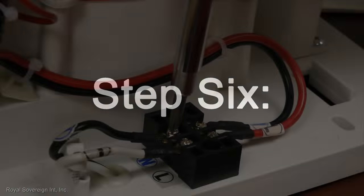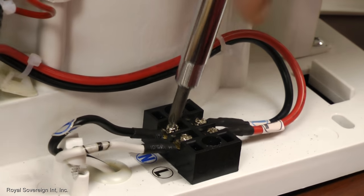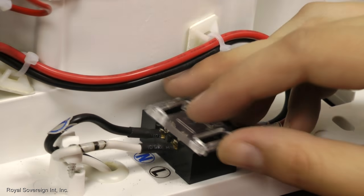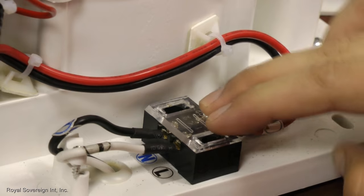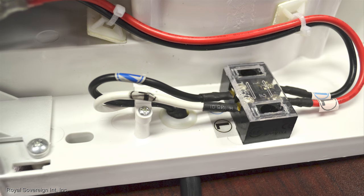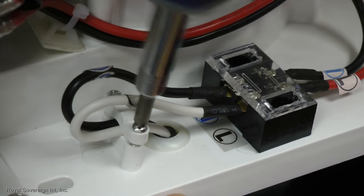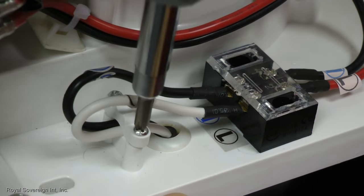Step 6: Tighten the screws on the terminal block to secure the cables. Place the plastic cover back onto the terminal block. Tighten the screw on the clamp to hold the wires securely in place.